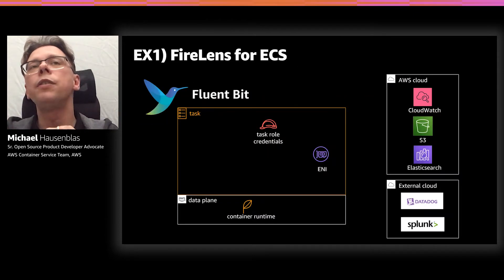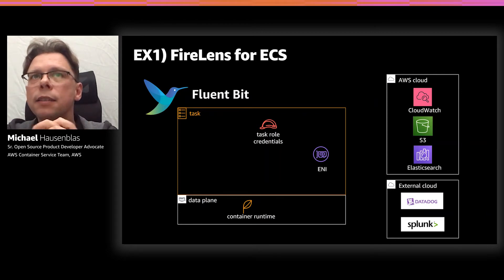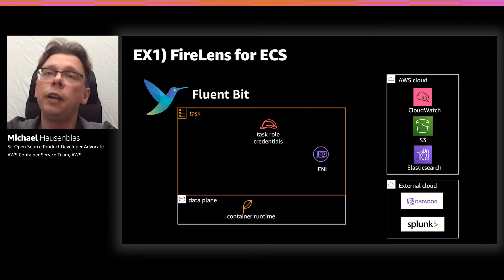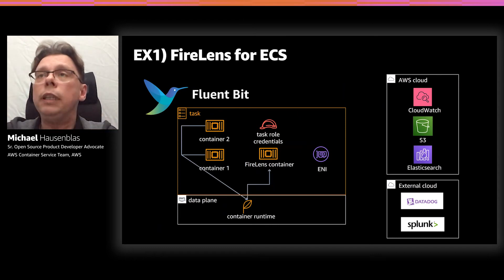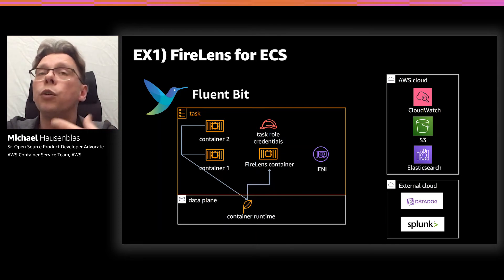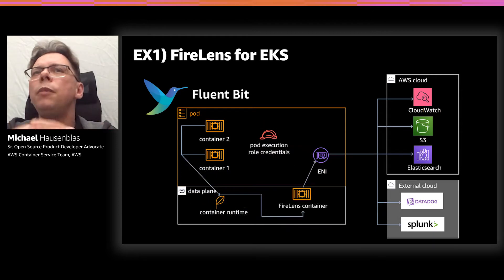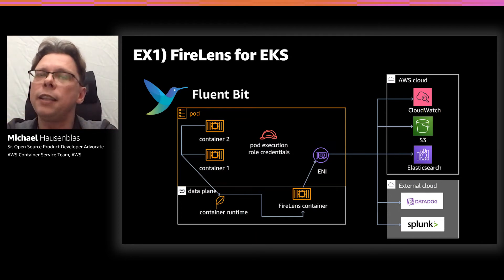Two exemplary integrations we've done: for Amazon ECS, our AWS-native container orchestrator, we provide the FireLens component as part of the control plane, and you use the normal declarative approach to define log routing — sending logs to CloudWatch, S3, Elasticsearch, or external partner environments like Datadog or Splunk. Similarly for Kubernetes on our managed offering EKS, the FluentBit container is part of the data plane, with more or less the same developer experience.